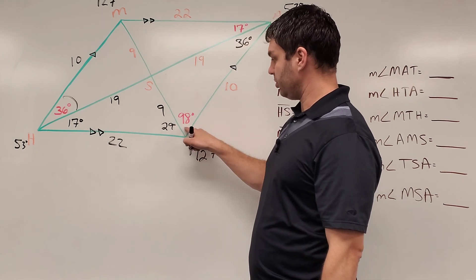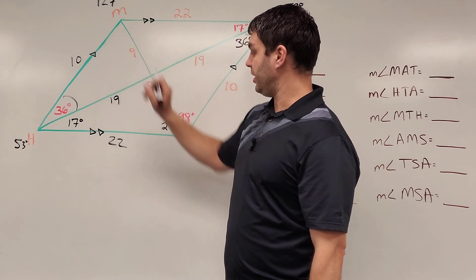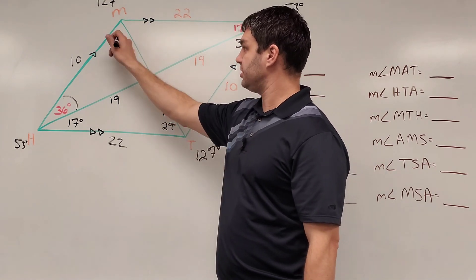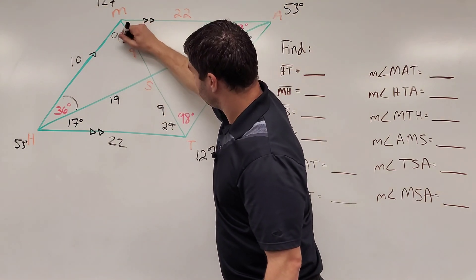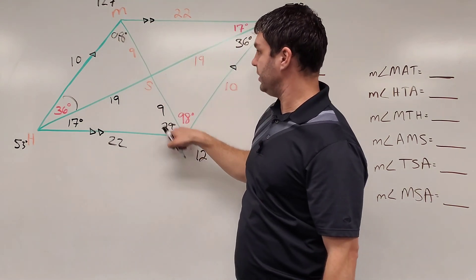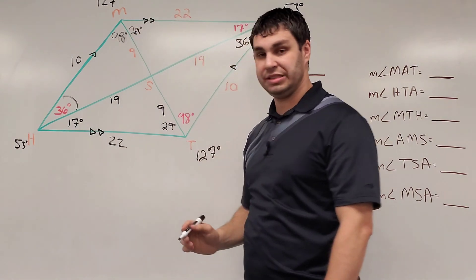Okay, these both have alternate interior angles, kind of like these ones did up here, but these ones are going to have alternates over there. So if this is 98, its opposite side, 98, 98 degrees. If this is 29 degrees, it's going to be 29 degrees for its alternate interior angle.